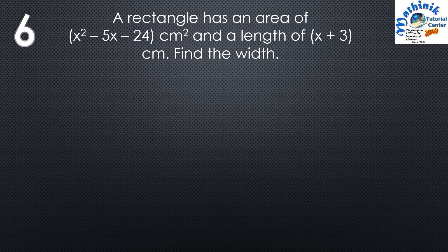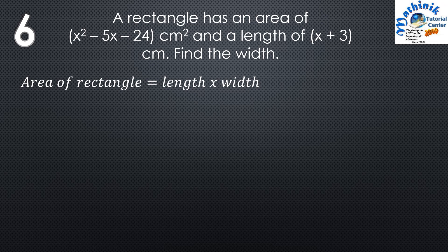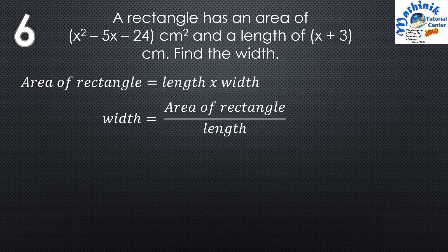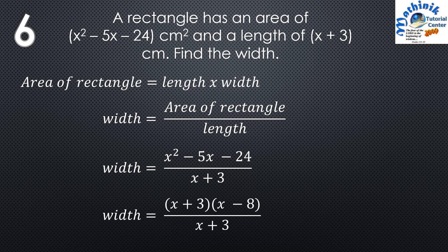Question number 6: A rectangle has an area of x squared minus 5x minus 24 square centimeters and a length of x plus 3 centimeters. Find the width. Area equals length times width, so width equals area divided by length. Substituting: (x squared minus 5x minus 24) over (x plus 3). The numerator factors as (x plus 3)(x minus 8). The (x plus 3) cancels, so the width is x minus 8 centimeters.